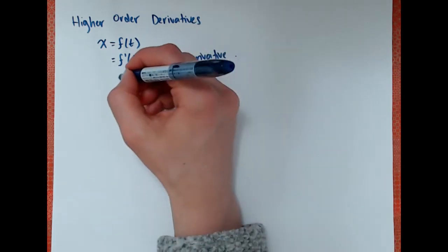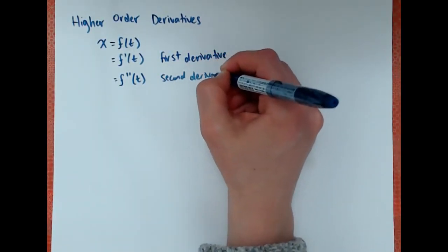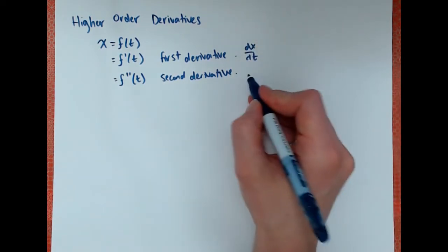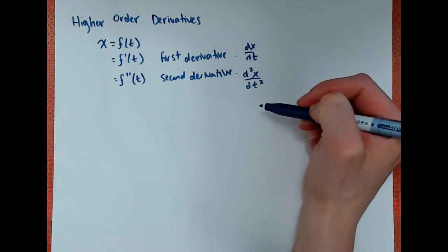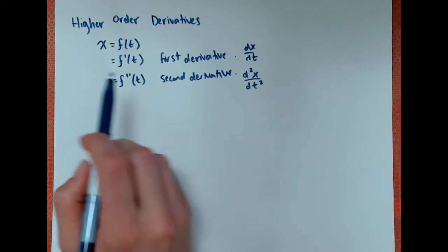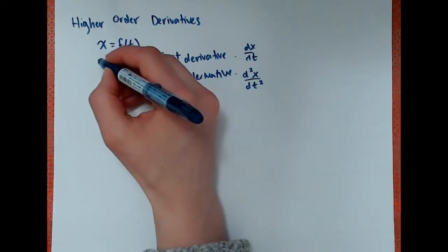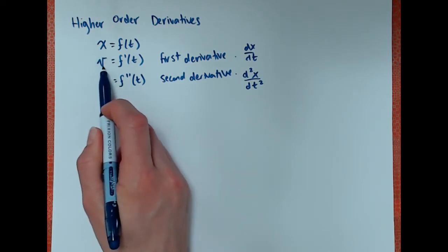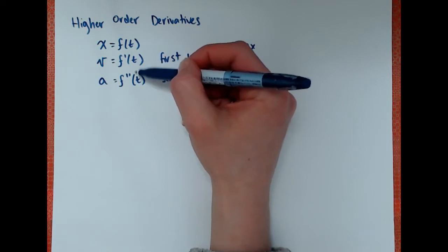If you take the derivative again, you get f double prime of t, called the second derivative. You can also use the notation dx over dt for the first derivative, and d squared x over dt squared for the second derivative. A real-world application: dx over dt is velocity, and taking the derivative of velocity gives you acceleration. In this course, we'll take the first derivative to get velocity and the second derivative to get acceleration.